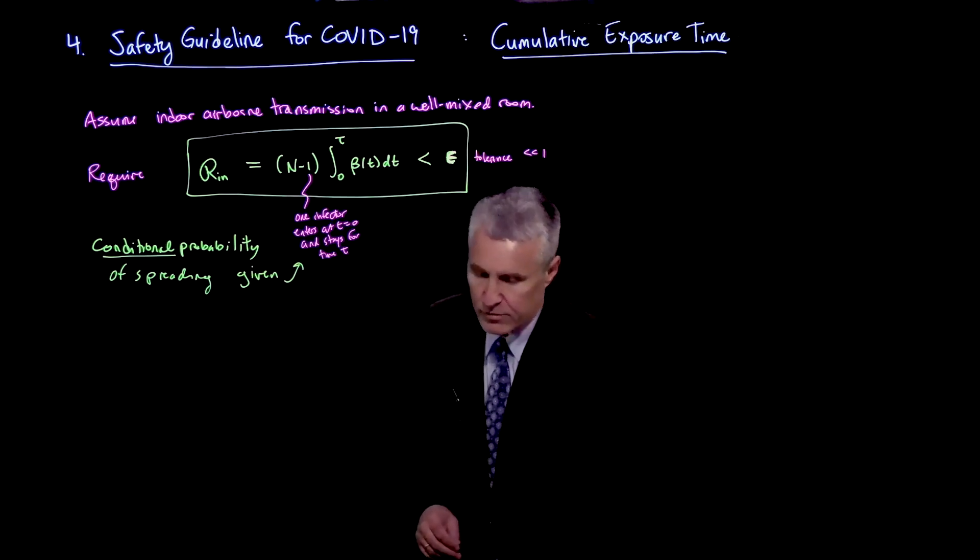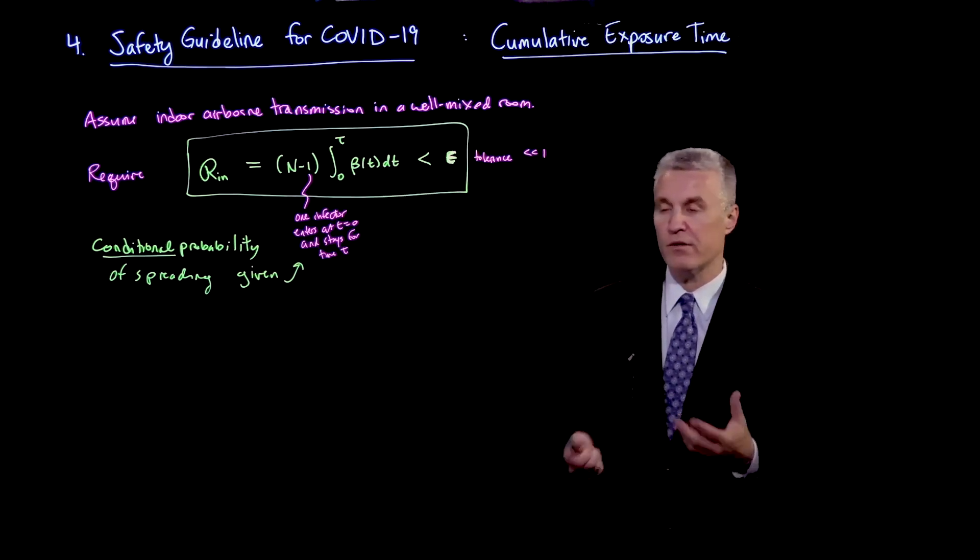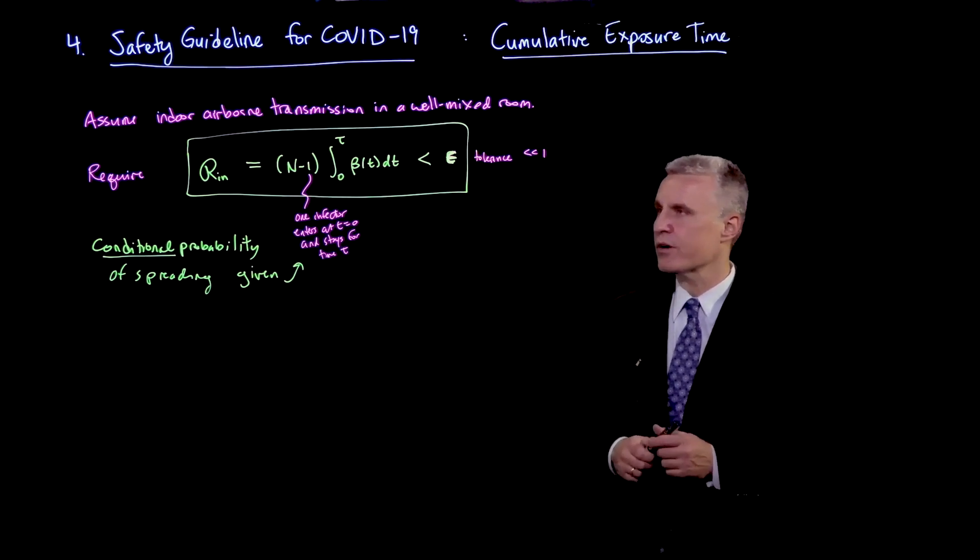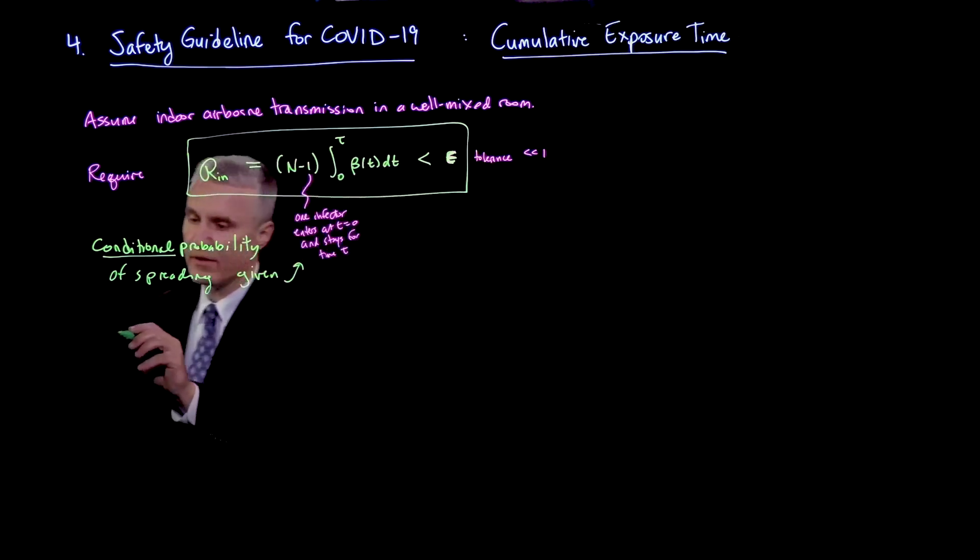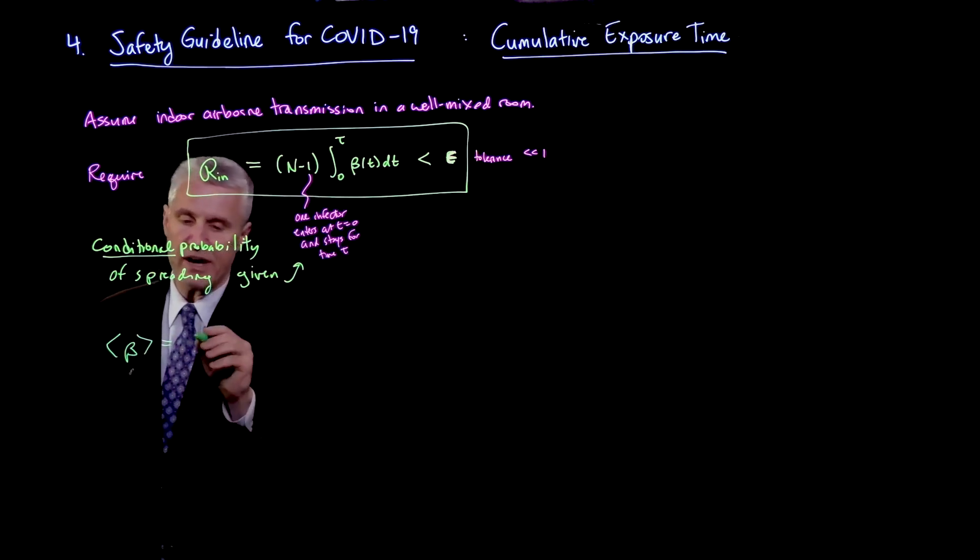And now, let's think about, already at this level, without getting into the details of what goes into beta, which we've already talked about, there's a very important concept here, which is that if I define beta with brackets here to be the average transmission rate.